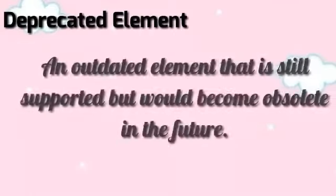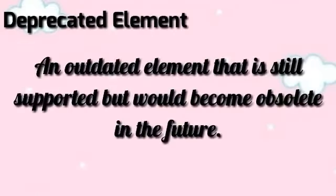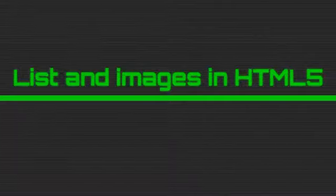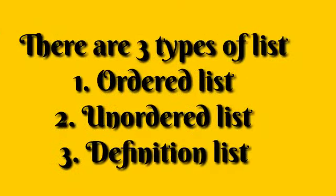Deprecated elements — an outdated element that is still supported but would become obsolete in the future is called a deprecated element in HTML. Now we will discuss lists in HTML5. There are three types of lists: ordered, unordered, and definition.